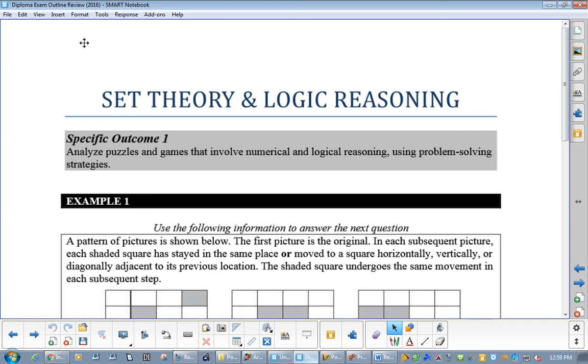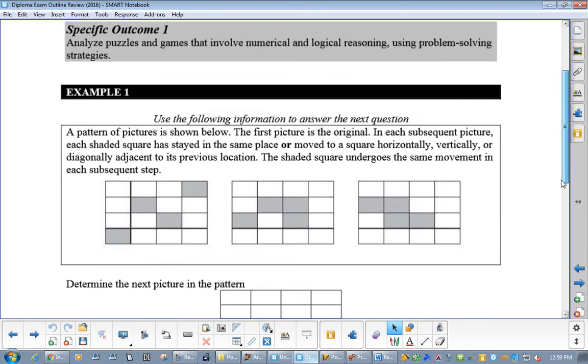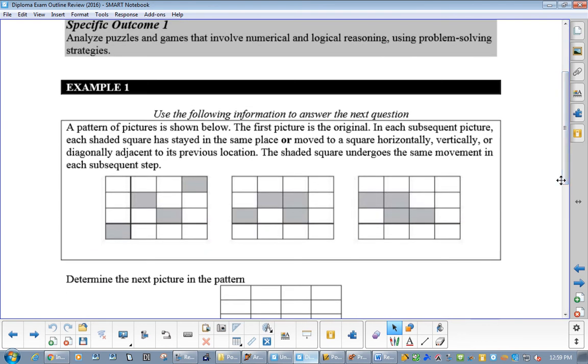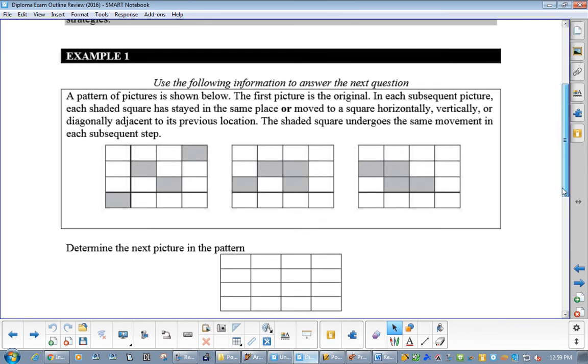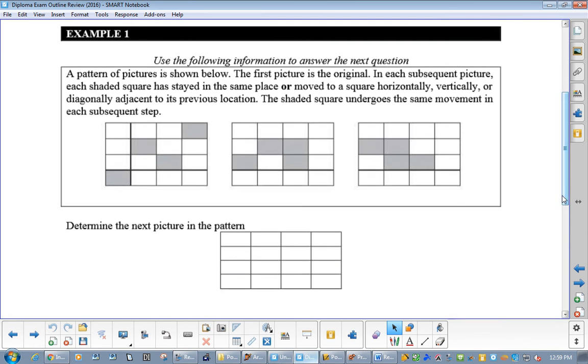We're moving right along. Right after we did trig, we went on to set theory. Now, they're going to have questions just like these, where they give you three boxes and you have to say what would be the next picture. You're not going to draw it. You would have A, B, C, or D. Which one to pick?